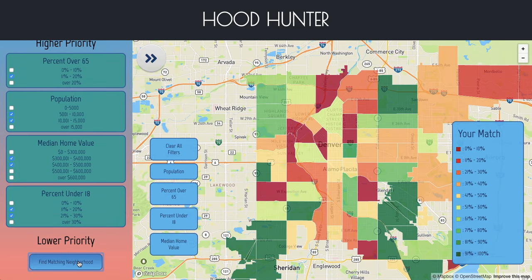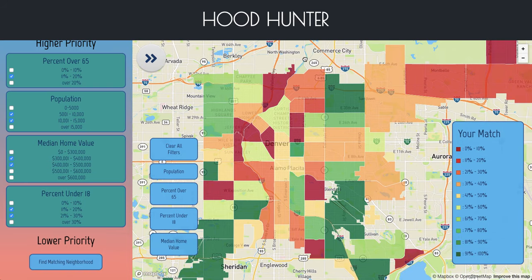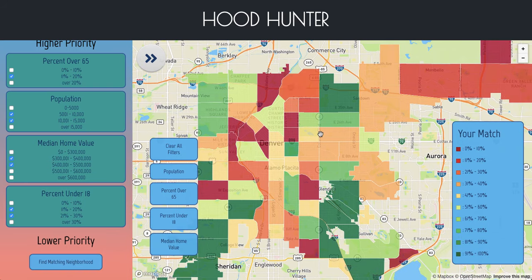When you click on the Find Matching Neighborhood button, it uses an algorithm that I created in order to find the best neighborhood matches and the worst neighborhood matches based on this key over here.